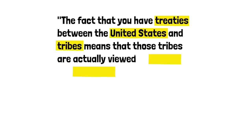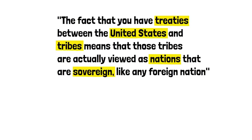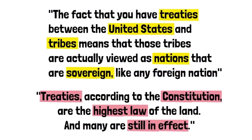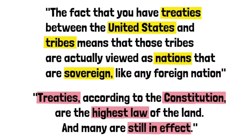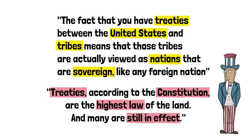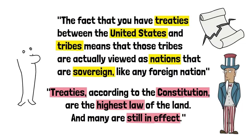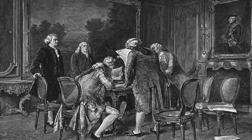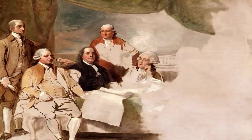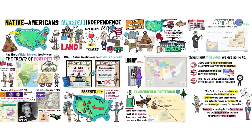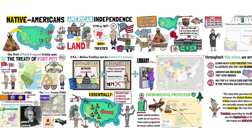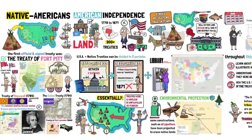American historian Mark Hirsch stated recently: 'The fact that you have treaties between the United States and tribes means that those tribes are actually viewed as nations that are sovereign, like any foreign nation.' He added: 'Treaties according to the constitution are the highest law of the land, and many are still in effect. They are just ignored and unfulfilled by the US government.' For a long time, the US got away with breaking its word and ignoring these legal treaties simply because the natives were not strong enough to make their voice heard or present a threat to the state — something they would have never dared to do against Britain, France, or some other strong nation. But in modern times, with this issue being out in the open and recognized by many as an injustice, the US government might finally be forced to fulfill the terms of their own treaties, and the result could be a benefit to all.